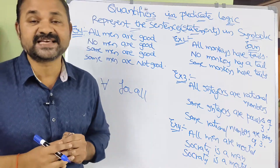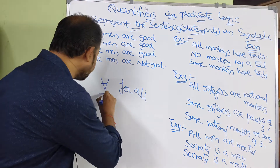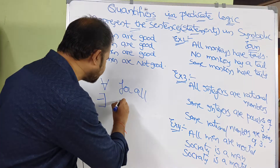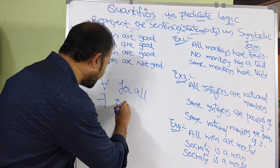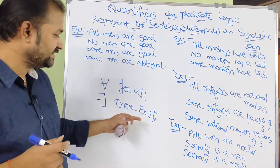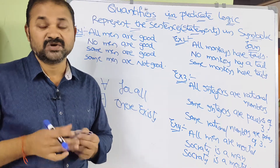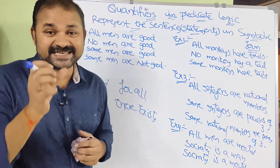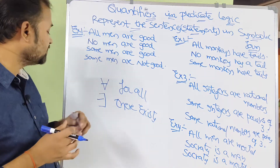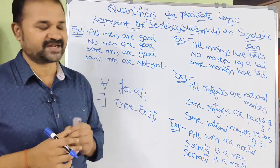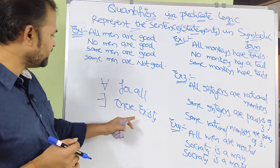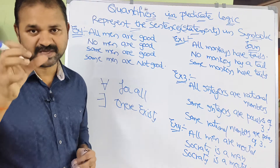The second one is the existential quantifier, represented by the reverse of the letter E. We call this 'there exists'. If the sentence contains 'there exists', 'some', 'few', 'there is at least', then we have to use the existential quantifier. So this symbol means 'for all', whereas the existential symbol means 'some'.